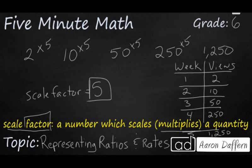So in this case, we're going to be able to find our scale factor by looking vertically. How are we getting from 2 to 10? That's multiplied by 5. How are we getting from 10 to 50? From 50 to 250. And then from 250 to 1,250. So that's going to be our scale factor of 5. Every week, the previous week's views are multiplied by 5. That's our scale factor.